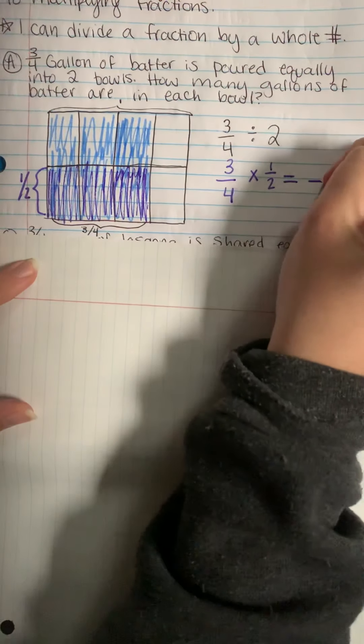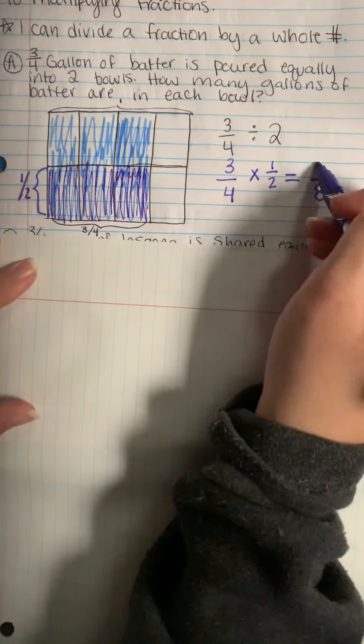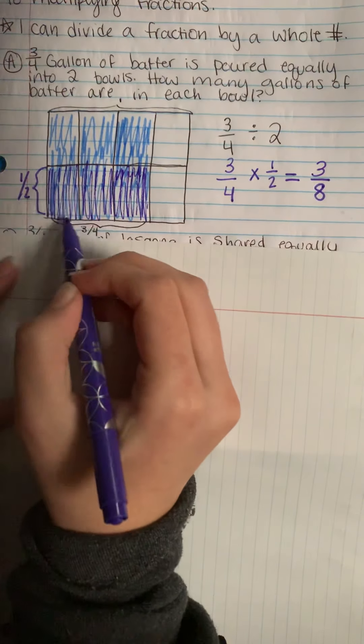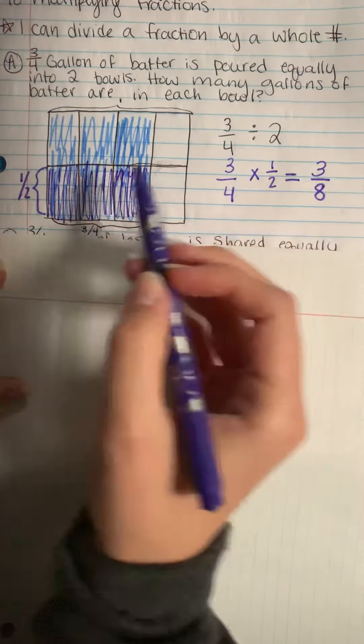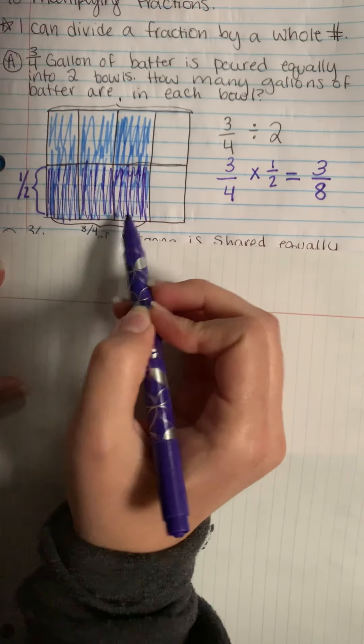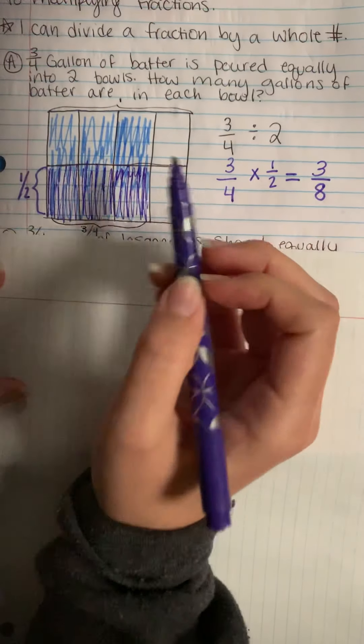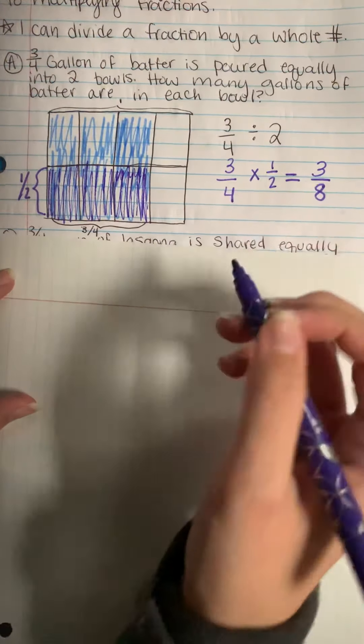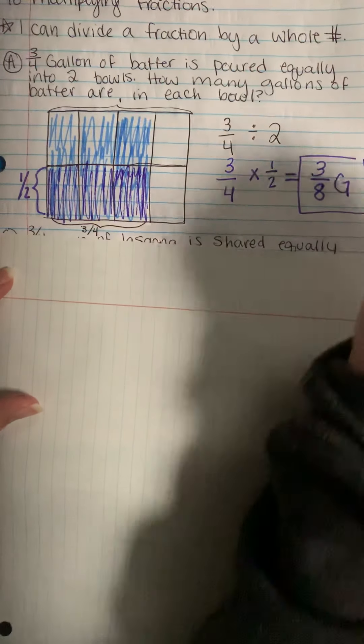So if I took my three-fourths and I divided it in half I now have one, two, three, four, five, six, seven, eight equal parts. And three of those parts are completely filled in with both blue and purple. So your numerator is going to be where you see both colors and your new denominator is how many pieces total are in your entire area model. So three-eighths gallons are in each bowl.